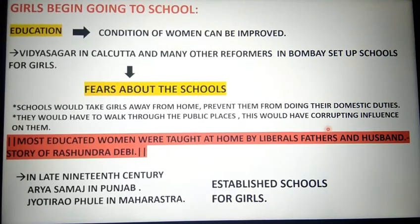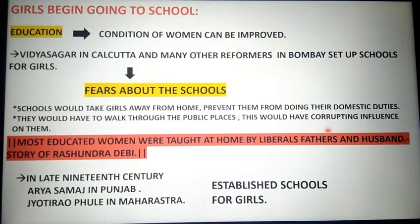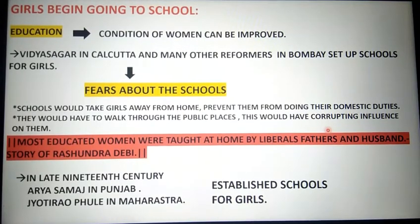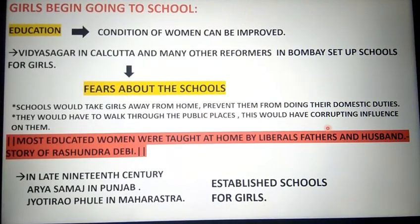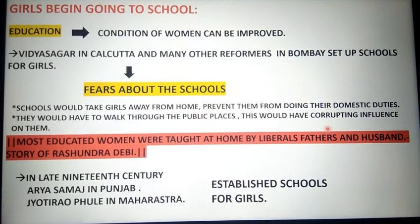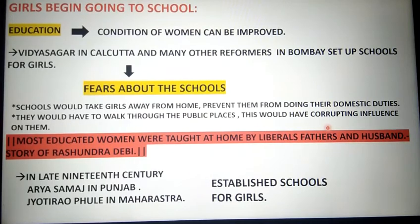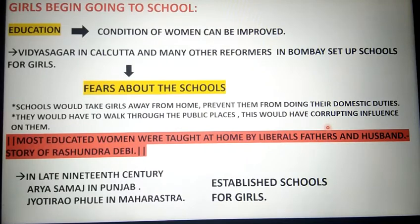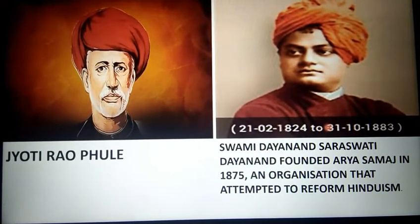Some believed that if girls went to school, they would go out and study away from home and after returning would not want to do household work. Also walking through public places would have a corrupting influence on them. In fact, most educated women in history were taught at home by their fathers or husbands who were liberal, yet even they preferred educating women at home rather than at school. One example in your book is Rashsundari Debi. In the late 19th century, Arya Samaj in Punjab and Jyotiba Rao Phule in Maharashtra established schools for girls.